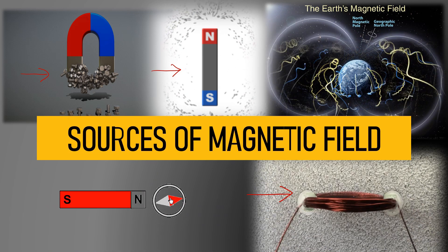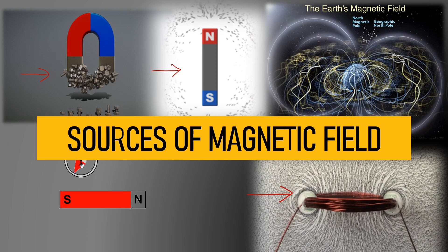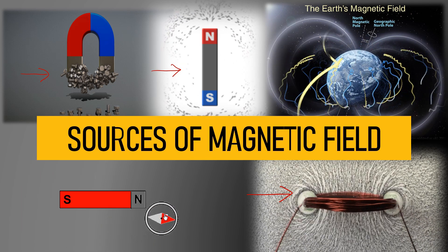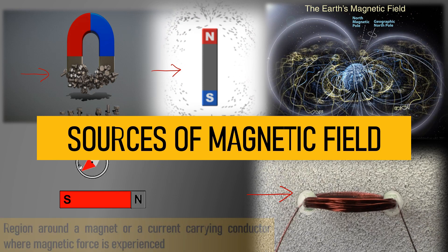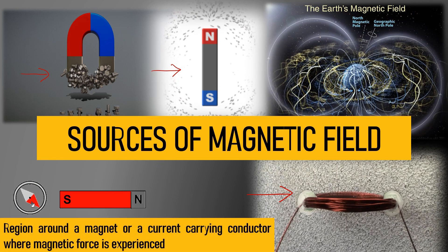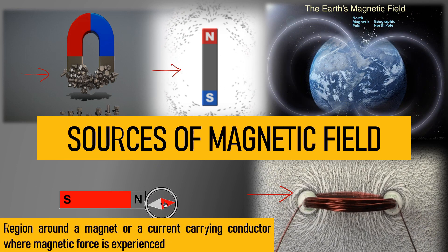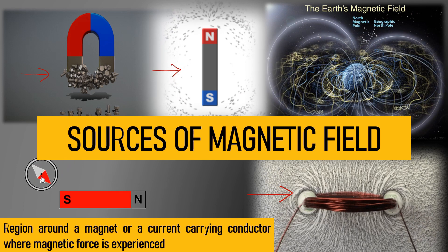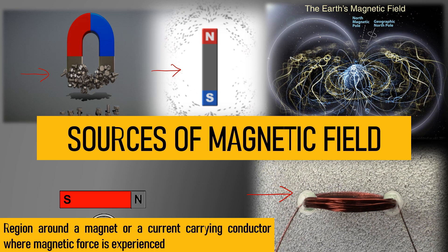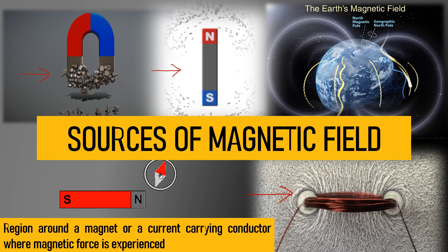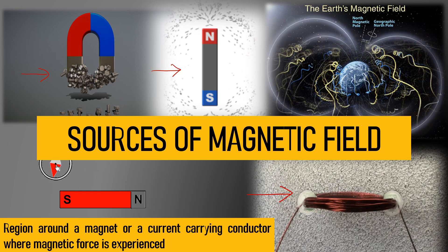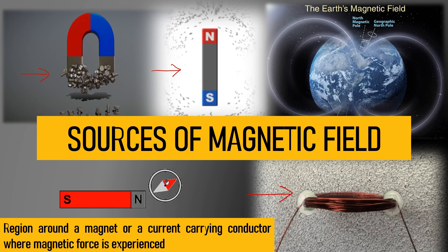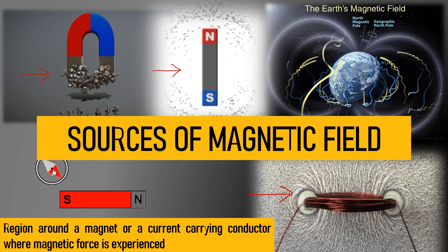These are some of the sources of magnetic field, including our Earth. The Earth generates its own magnetic field like a bar magnet. Hence, we can define the magnetic field as a region or space around a magnet or around a conductor that carries current, where the space will experience magnetic force. If you put any magnetic object such as iron powder around a magnet, there will be a force of attraction between them.